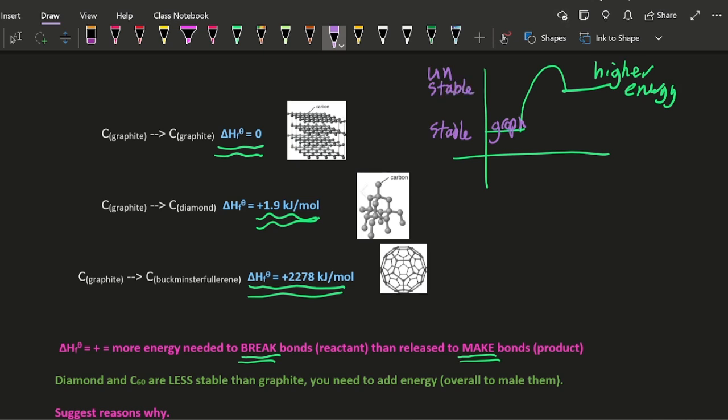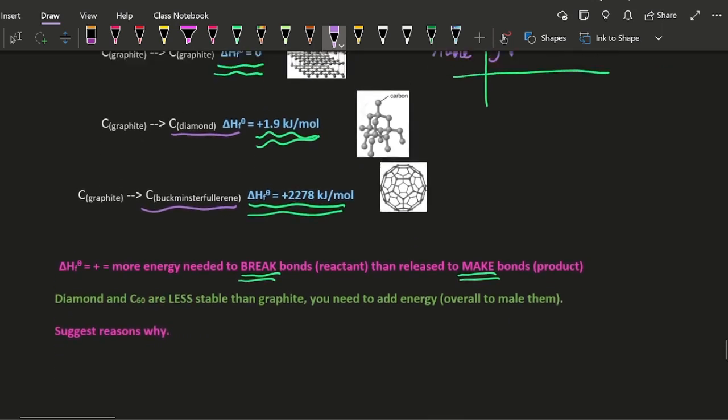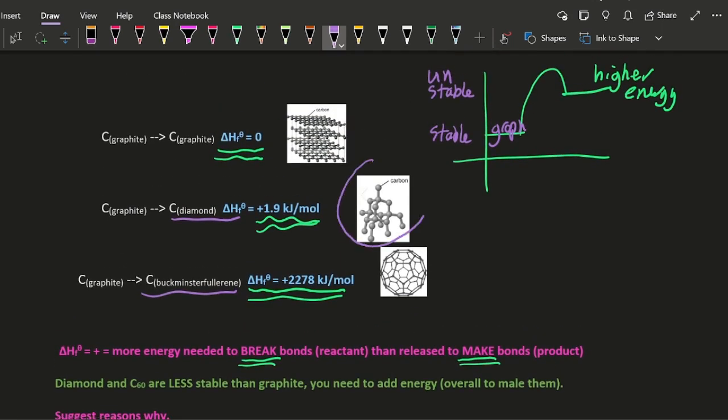So that means that buckminsterfullerene and diamond are less stable. You need to add energy overall to make them. So why is that? What is it about these two molecules here that make them less stable than graphite?